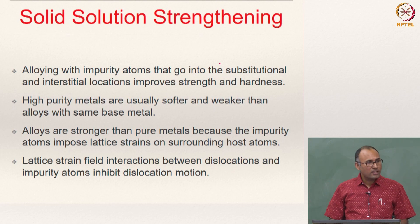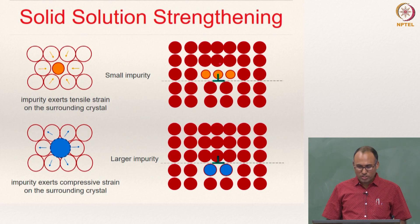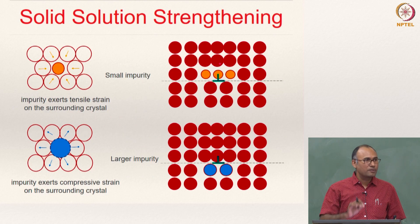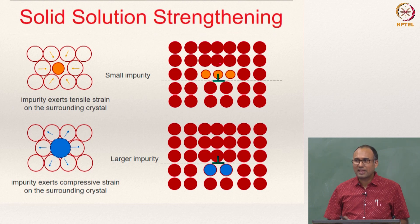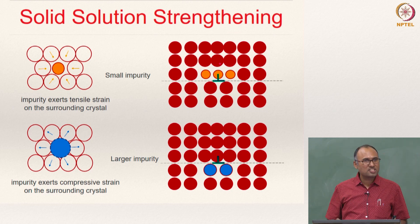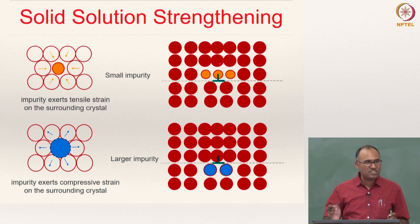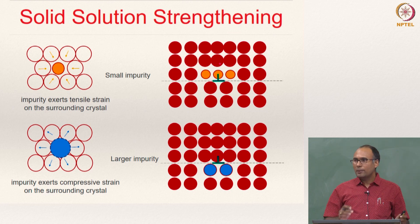We have also discussed solid solution strengthening. When you put in an impurity element, it locally changes the stress state and the dislocations have to interact with that stress state. As a result, your material gets strengthened.